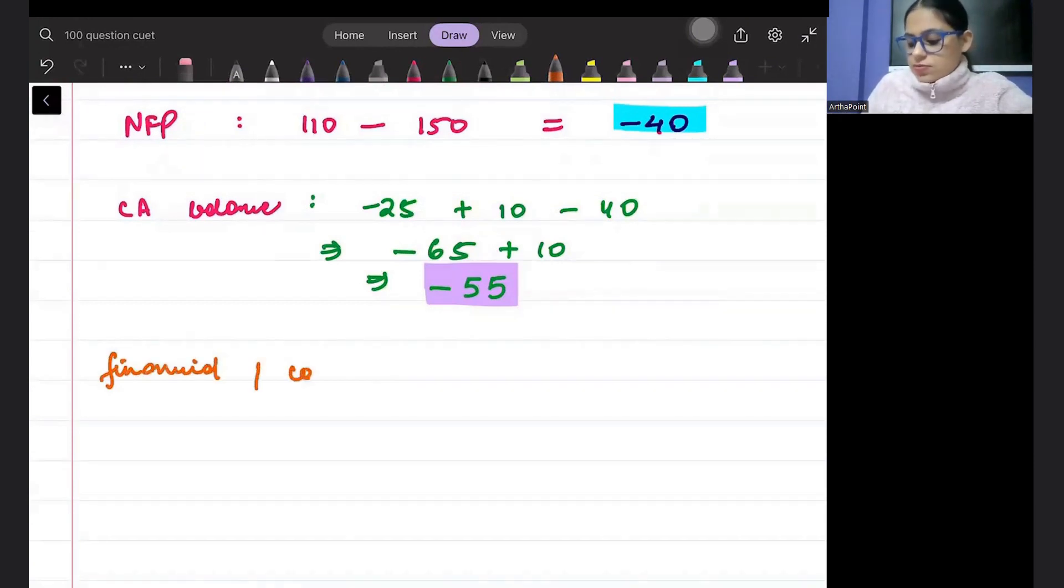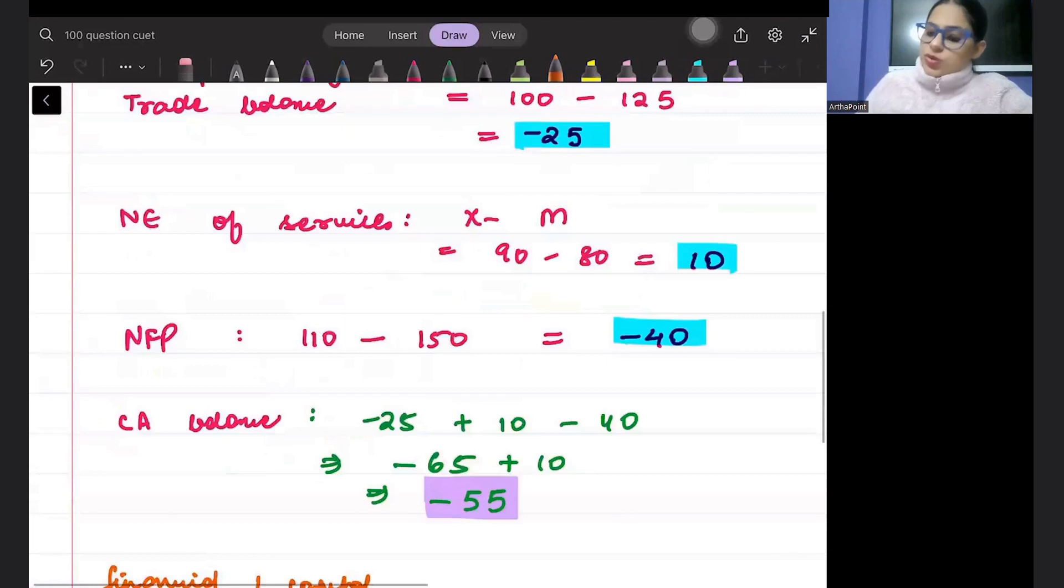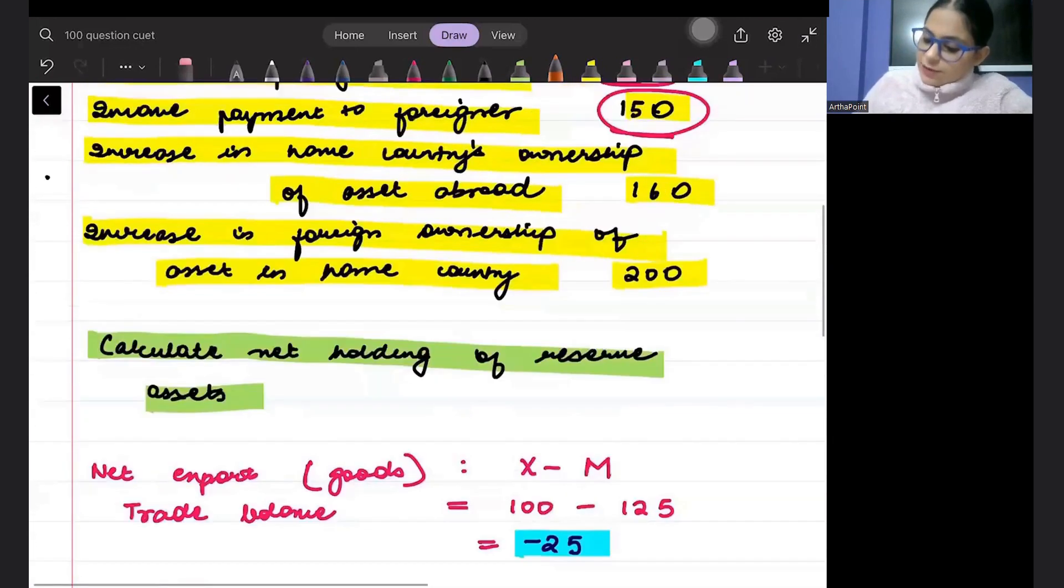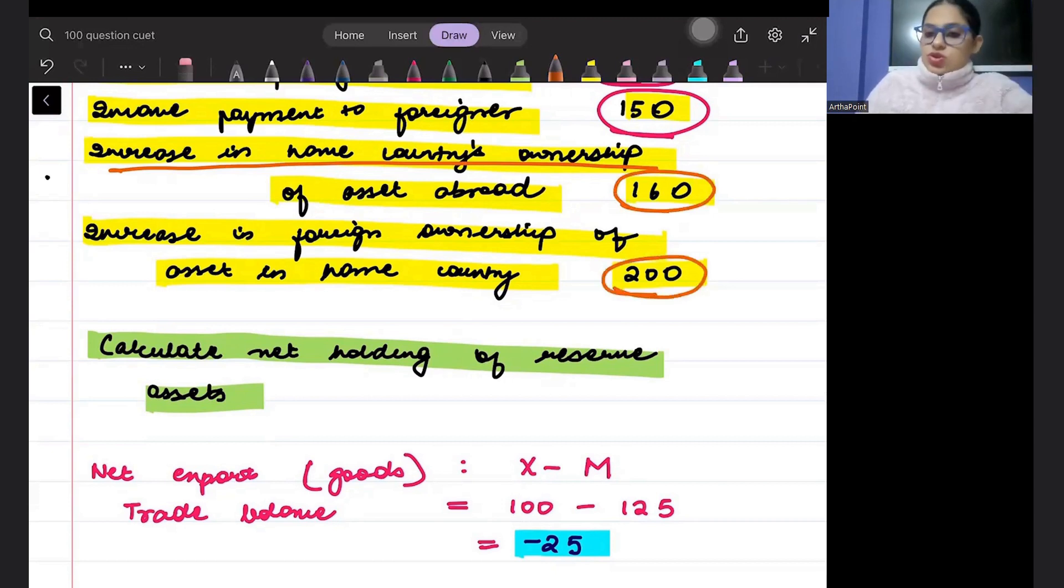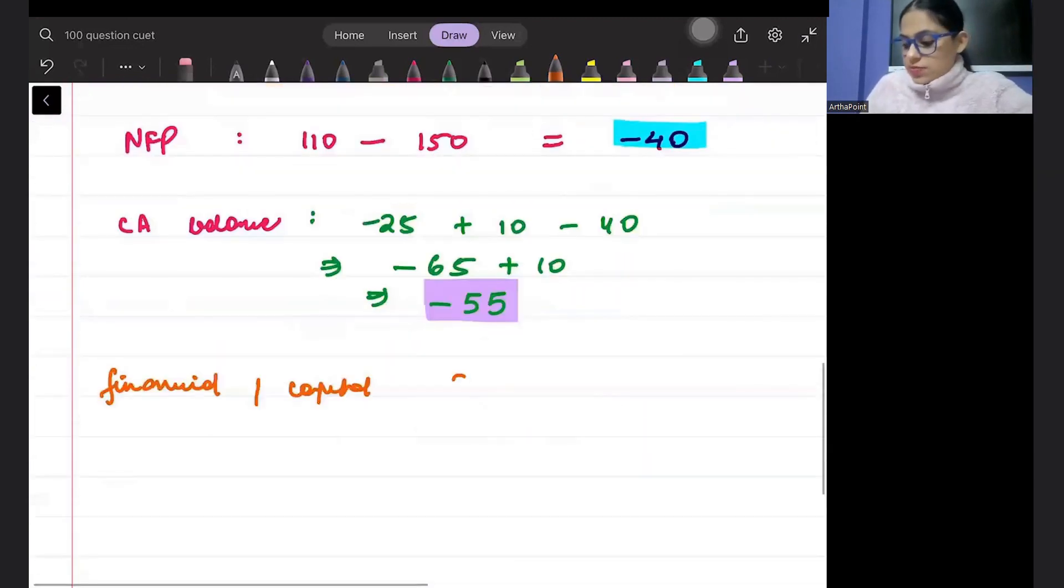So in capital account, we have increase in home countries ownership of foreign assets. How much money is going out is 160. How much money is coming in is 200. So it is going to be 200. People have invested in your country. Minus 160. That means plus 40.